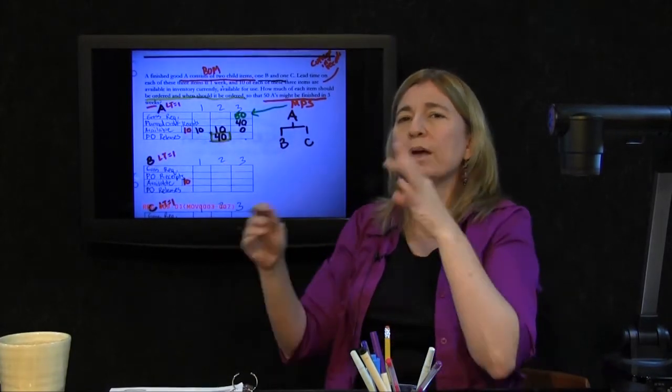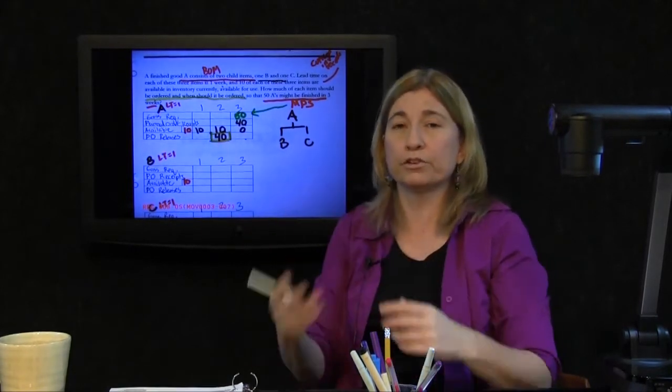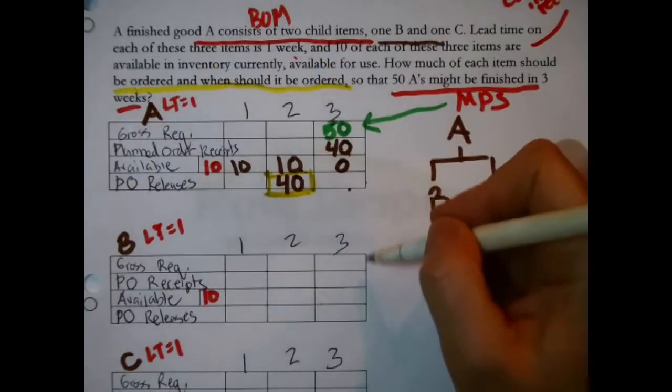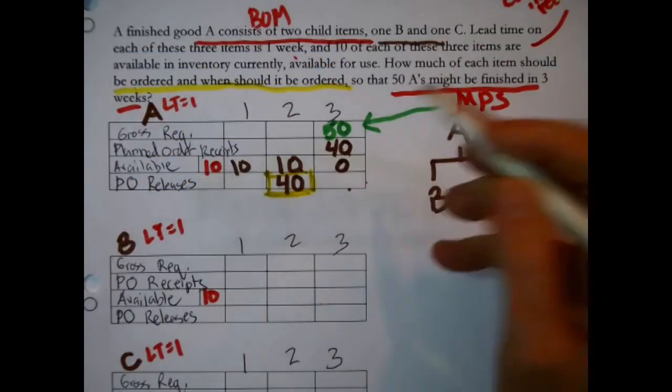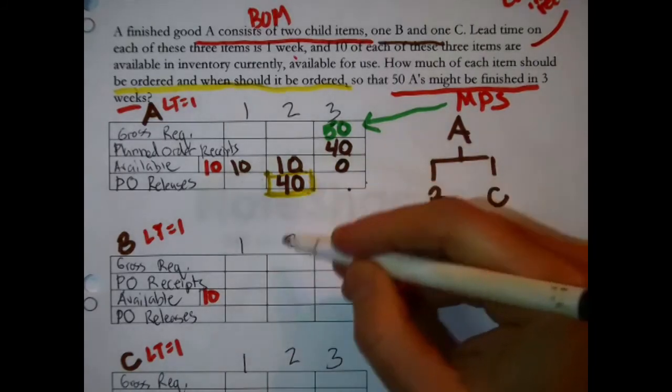are passed into the gross requirements line of the child's record. Because you're making arrangements to be able to work on those forty that you're going to request in the second week. The bottom line of the parent is passed into the top line of the child's record, multiplied by the number of children required to make one parent.